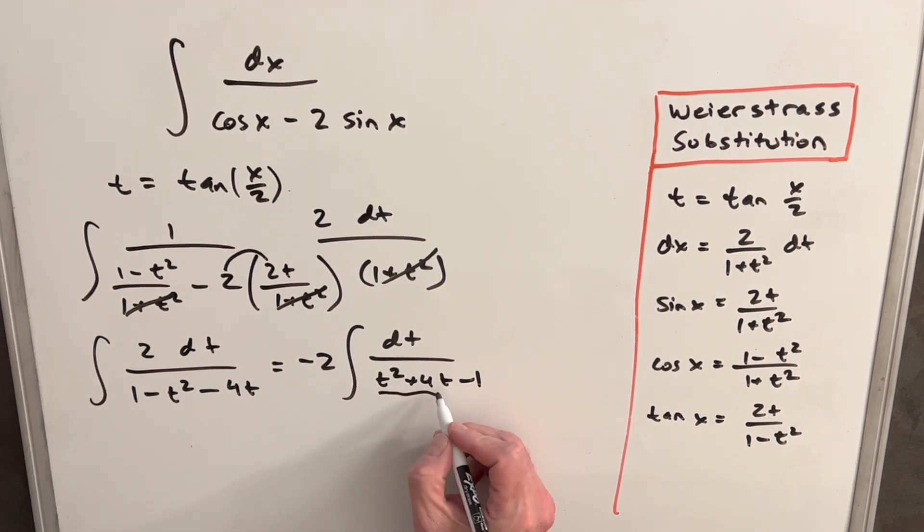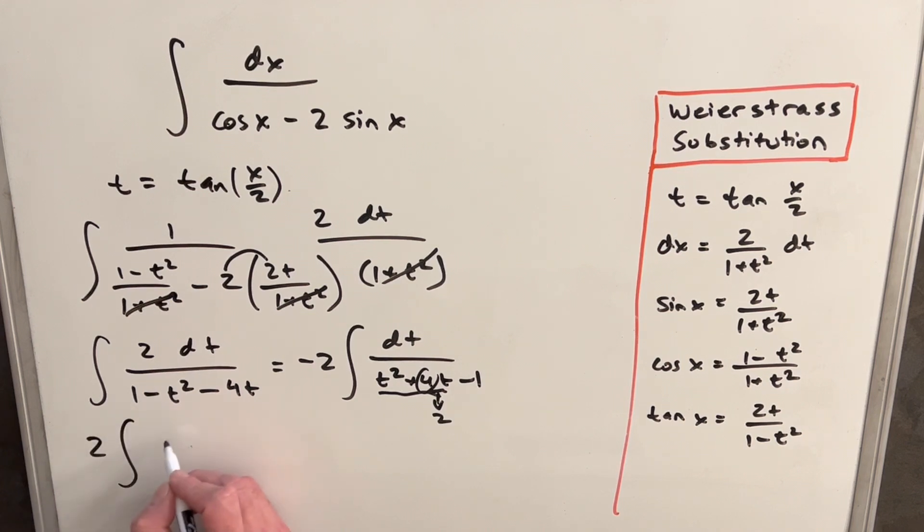Then I can complete the square using half of this middle term, which is going to be 2. Half of 4 is 2. So we'll write this as minus 2 dt over t plus 2 squared. That's going to give us an extra 4, so we'll subtract off that 4 and we have our minus 1. But minus 4 minus 1, we'll just rewrite that as minus 5.